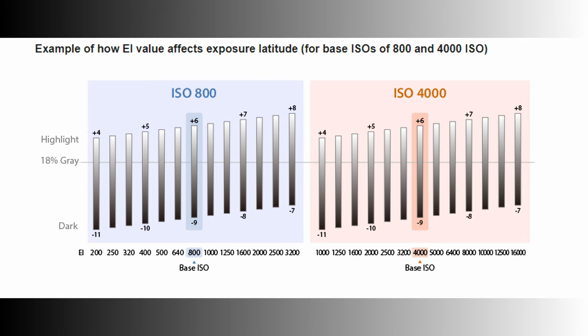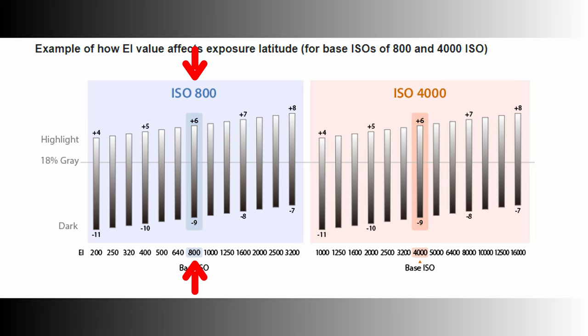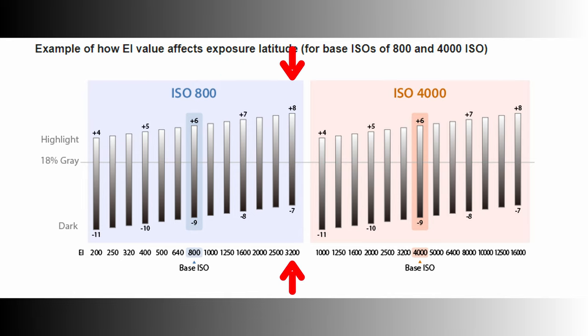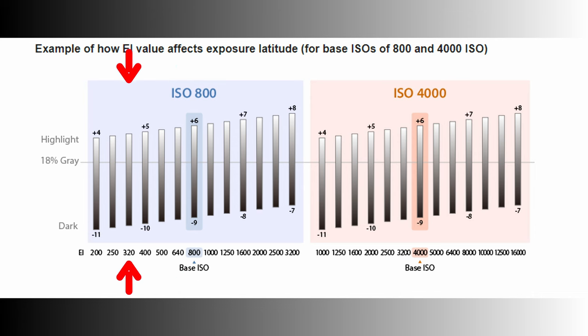Every camera sensor has a finite amount of dynamic range — really, an amount of light that it can capture cleanly. While the dynamic range is finite, what can switch is the amount of information the camera can capture above middle gray and below middle gray. Sony has a handy chart for S-Log3 showing the finite dynamic range — around 15 or 16 stops at the base ISO. At 800 ISO, you have so many stops above middle gray and so many stops below. As you increase the ISO, you get more information above middle gray in the highlights, but fewer stops below middle gray. As you decrease the ISO, you get more information in the shadows and less in the highlights.